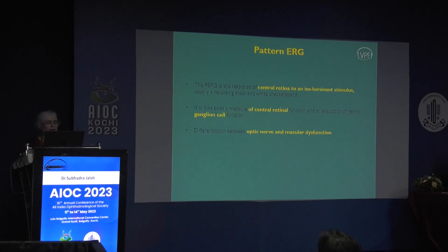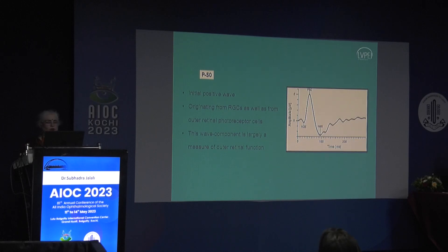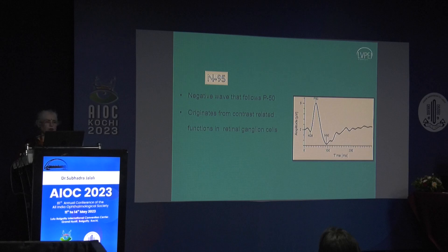Pattern ERG signals come from both ganglion cells and photoreceptors of the macula. The initial positive wave is from retinal photoreceptors — mostly macular photoreceptors — whereas the N95, the second downward peak, is from the ganglion cells. Pattern ERG can therefore be used for glaucoma assessment or ganglion cell toxicity studies.